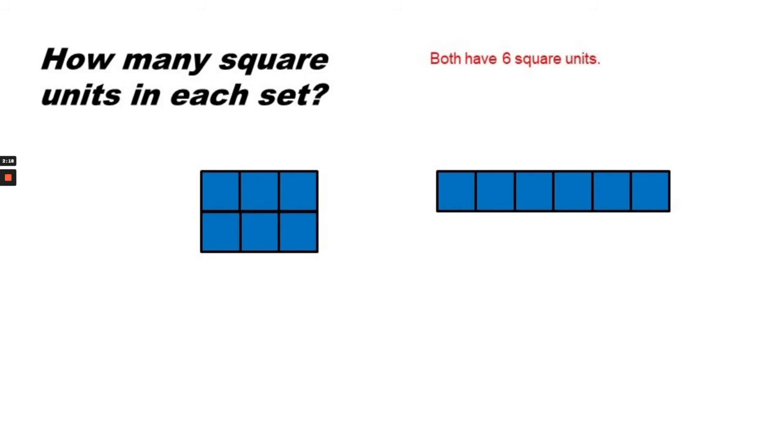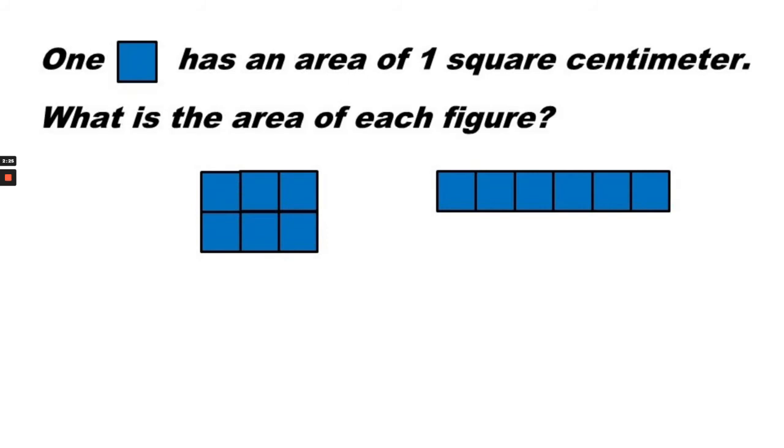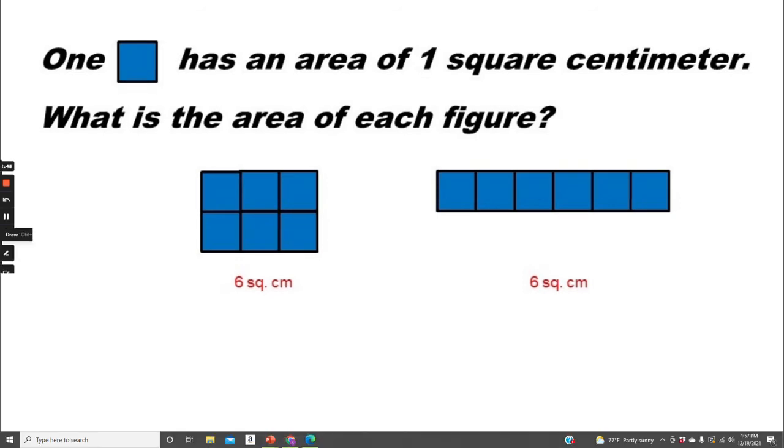Yes, both sets have six square units. One square has an area of one square centimeter. So what is the area of each of these figures? To find the area, we would count the number of squares. So this figure has six squares, so we can say that it has six square centimeters. This figure has one, two, three, four, five, six squares, so it too has six square centimeters.